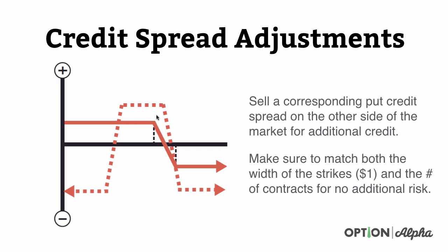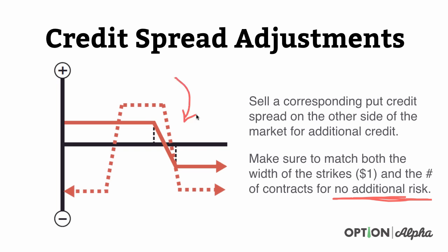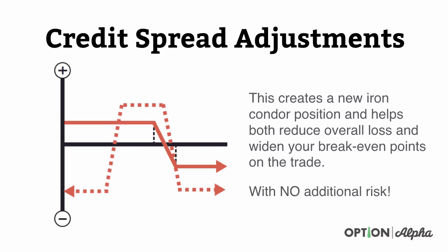You basically match up the width of the strikes — $1 in this case — and the number of contracts, and turn this thing into an iron condor with no additional risk in the trade. You're going to take that original call spread side and leave it alone, then add a put credit spread down below the market to turn this into an iron condor. If you sold a $1 wide call spread and did three of them, you would sell another $1 wide put spread and do three of them, making everything exactly the same. Because the market can't be on both sides at expiration, you take on no additional risk, and all you do by selling this additional put credit spread is reduce the risk in the trade.